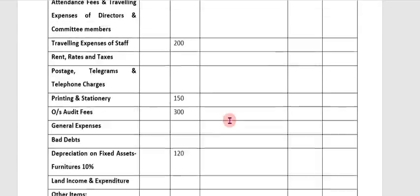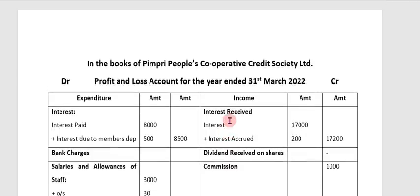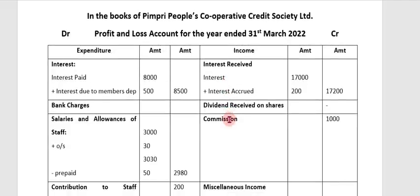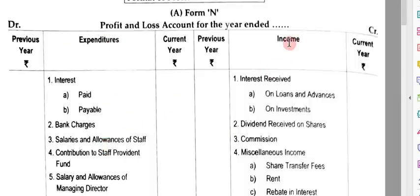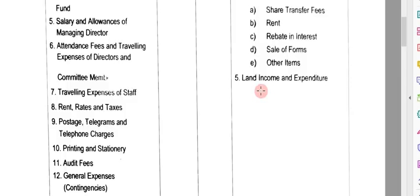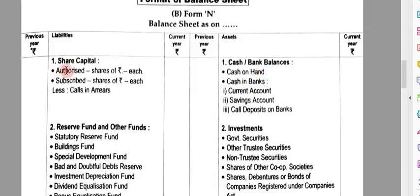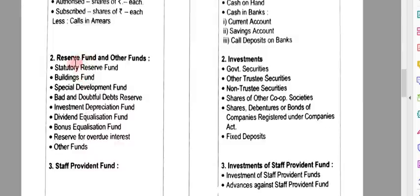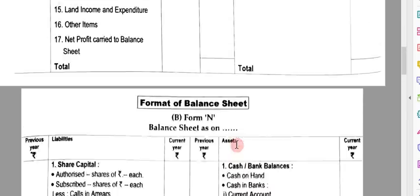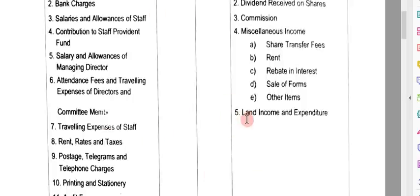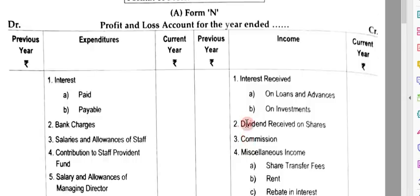In this way, you have to solve the final accounts — prepare the profit and loss account and balance sheet for the credit cooperative society. To summarize: remember the format of profit and loss account and balance sheet — don't forget the sequence. In the balance sheet, headings should come in proper sequence like share capital, then reserves fund and other funds, and so on, as explained in the first lecture.